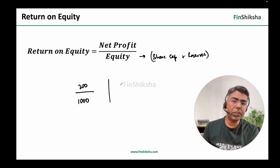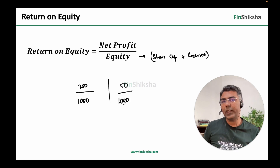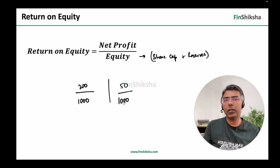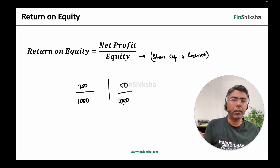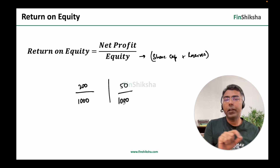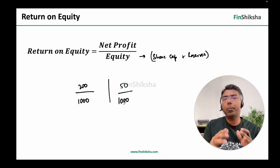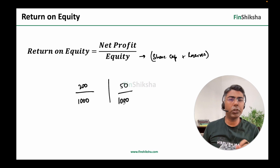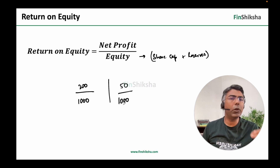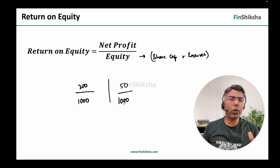On the contrary, if return on equity is something like 50 crore profit on 1000 crore equity, that's a 5% return on equity. In this case, shareholders may not be too happy and might say give this money to us and we'll figure out what to do with it elsewhere — I don't want a 5% return on my money. So a higher return on equity means shareholders are happy and the company will have access to capital. There's a detailed video on return on equity — link will be in the description.